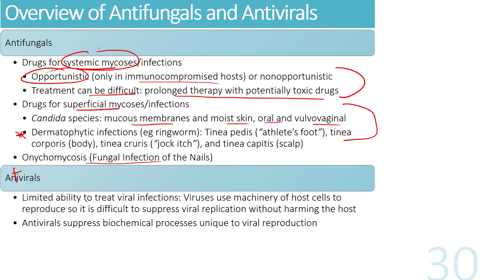Antivirals are needed to treat viral infections, but they must be specifically developed because viruses use our own mammalian cellular machinery to reproduce. The challenge is developing a drug that stops viral replication without harming normal cells — requiring identification of chemical processes specific only to viral reproduction.